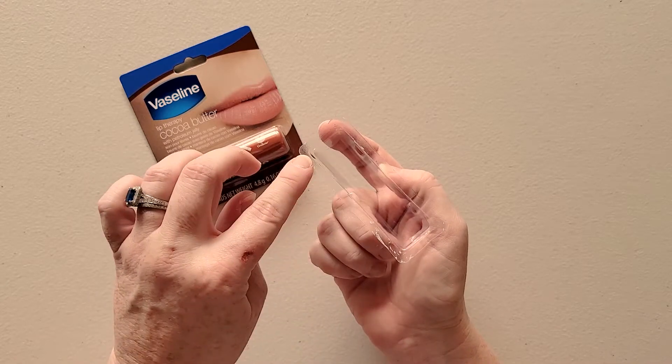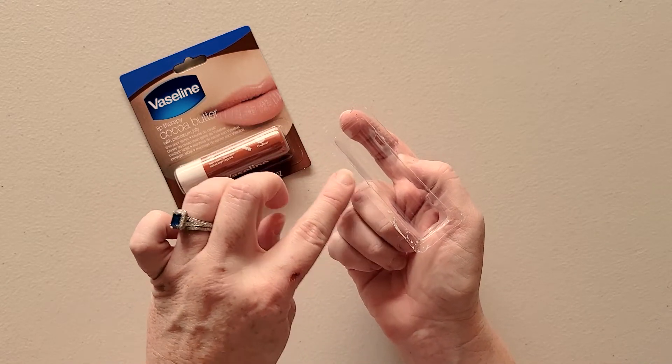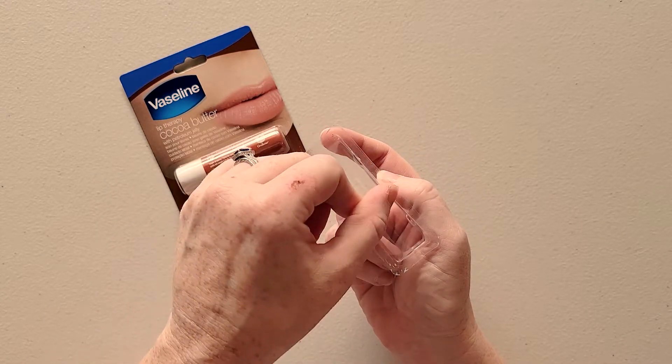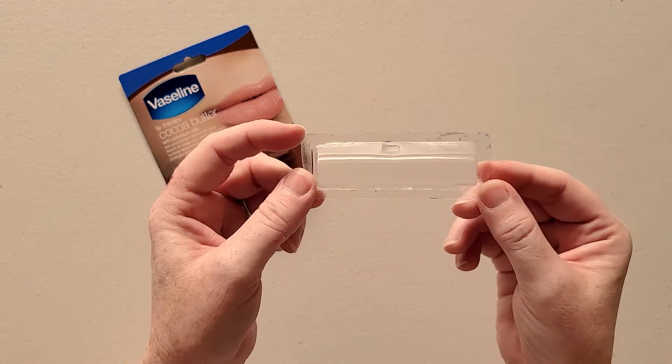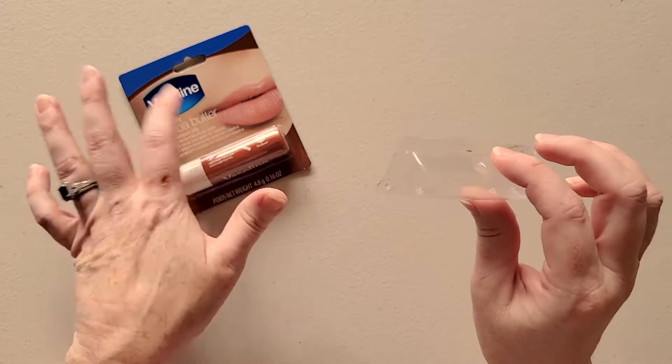If there were some bits of the cardboard still stuck to the back of the plastic, I was able to just scrape that off and then have it removed from the cardboard.